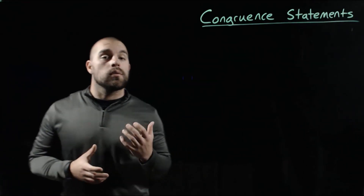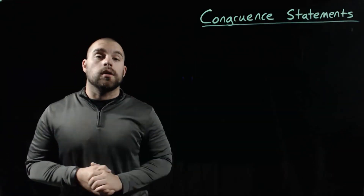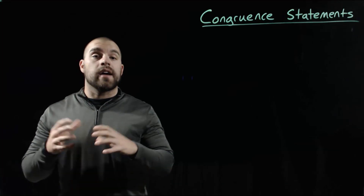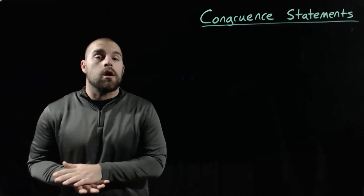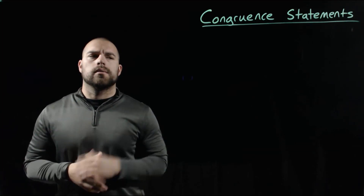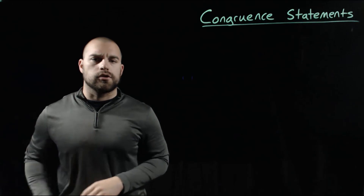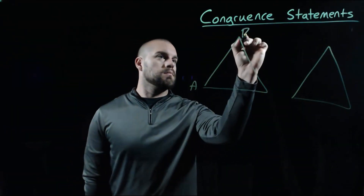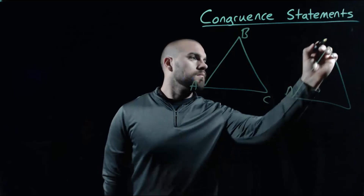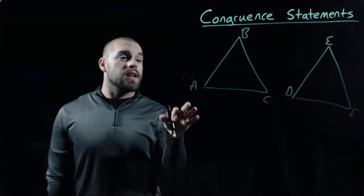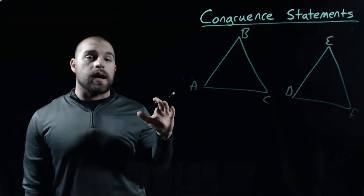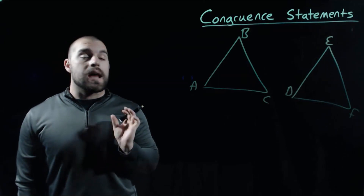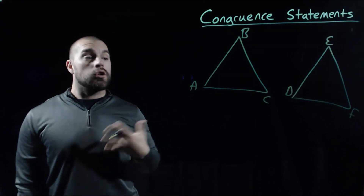When we're dealing with congruent figures, we can write out something called a congruent statement, which is just a way of identifying that the two figures are in fact congruent. So let's take a look at a couple of triangles. On the left-hand side we've got triangle ABC, and on the right-hand side we've got triangle DEF.